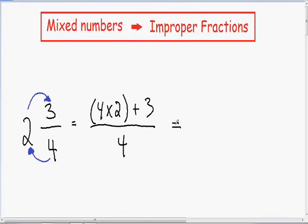So then in our numerator we have four times two which is eight plus three, and in our denominator we still have our four. Eight plus three is equal to eleven over four.